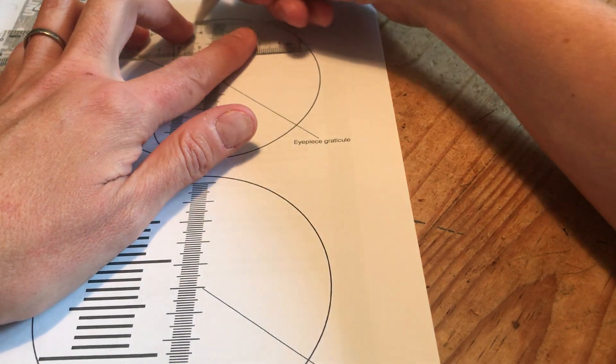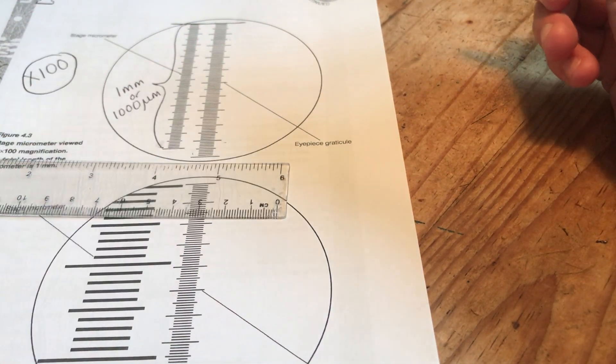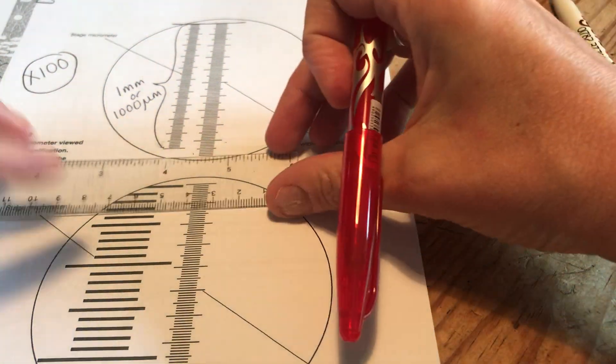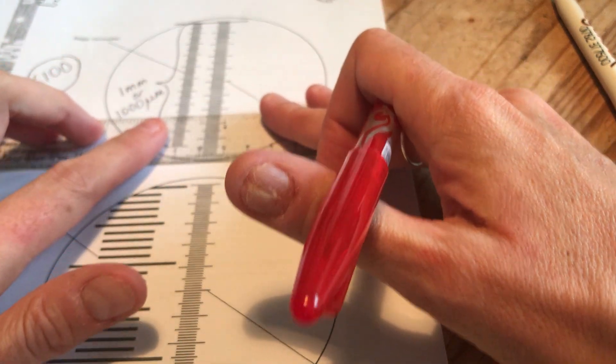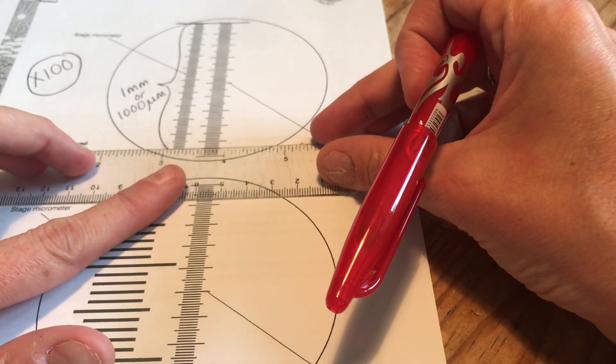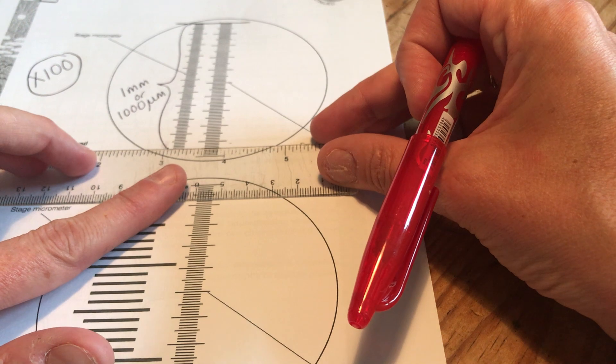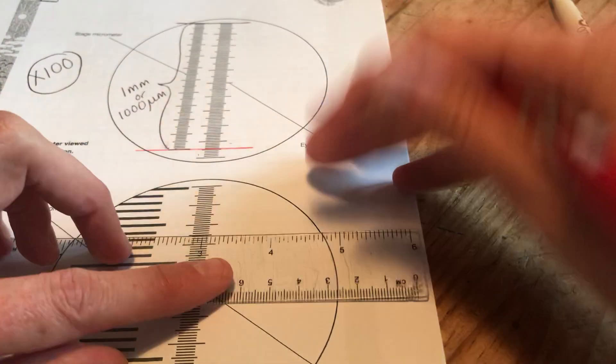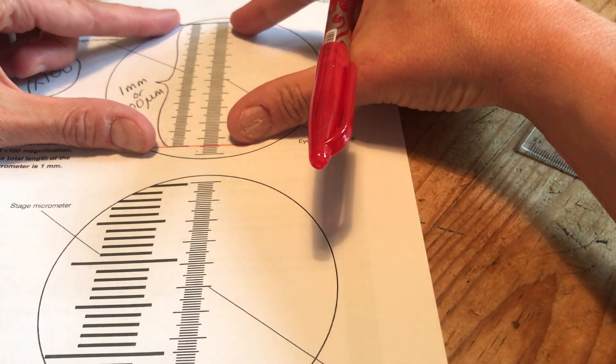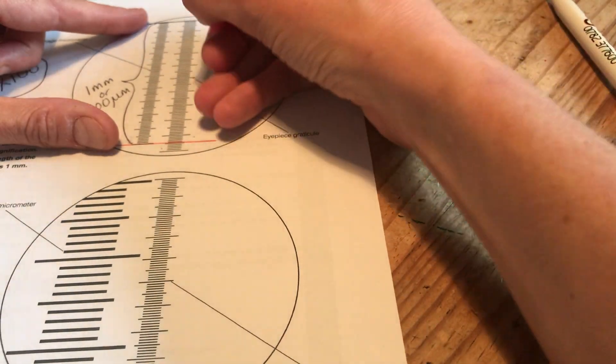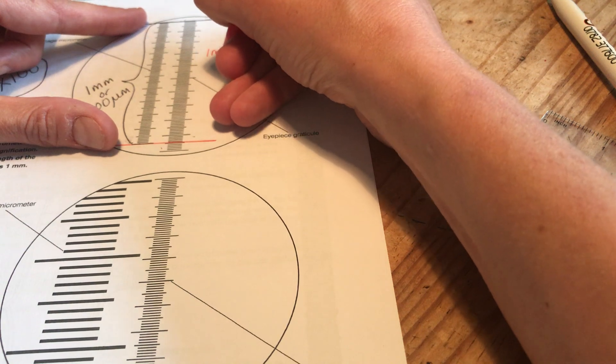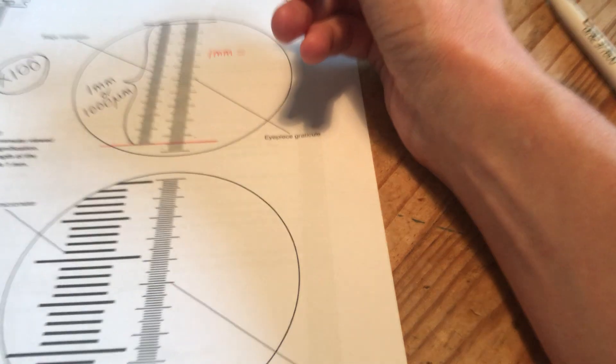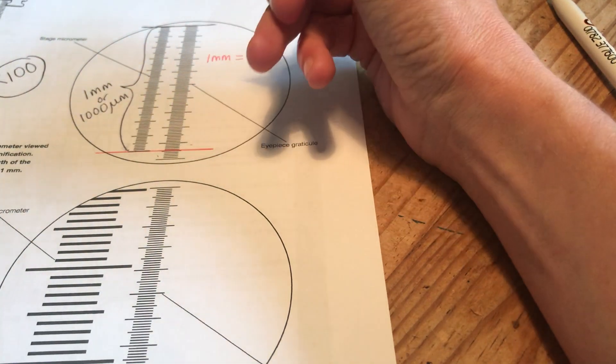So for instance these two lines line up really nicely here. I might use a red pen to help you see this a bit better. I could pick any point where the lines line up nicely but I'm going to go just at the end here. They don't line up perfectly so you're going to get a little bit of error. But can you see I've lined up these two scales. Now I know that one millimeter in real life is equal to, if I add up how many lines I can see here.